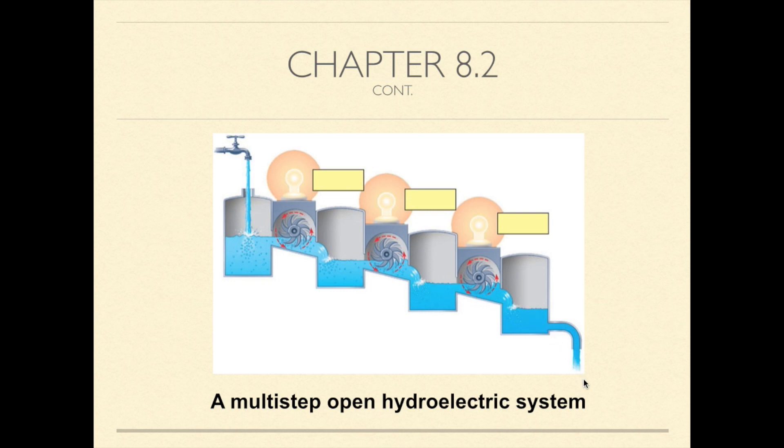Sunlight provides a daily source of free energy for photosynthetic organisms. Non-photosynthetic organisms depend on the transfer of free energy from photosynthetic organisms in the form of organic molecules.